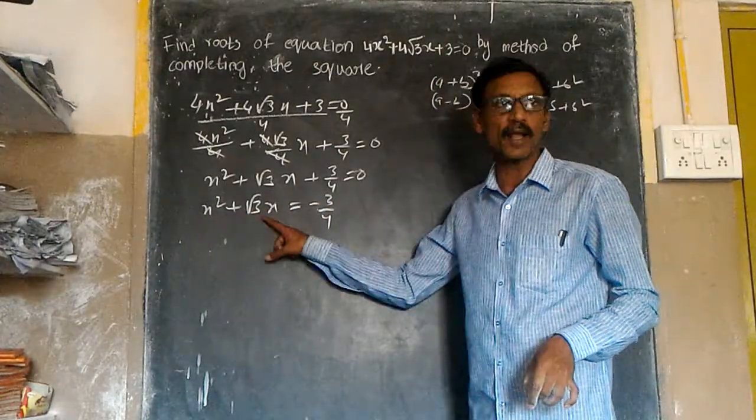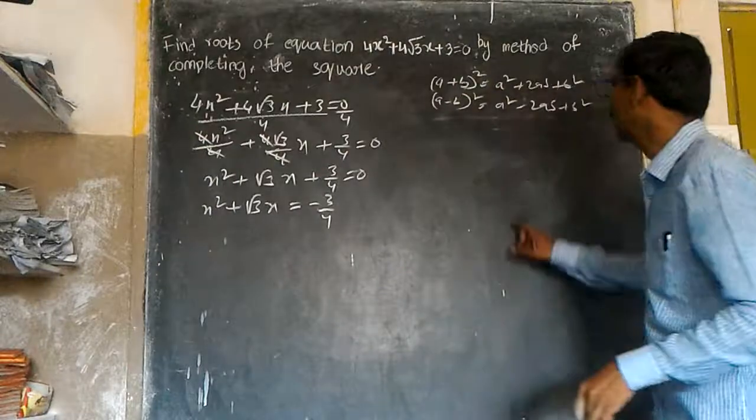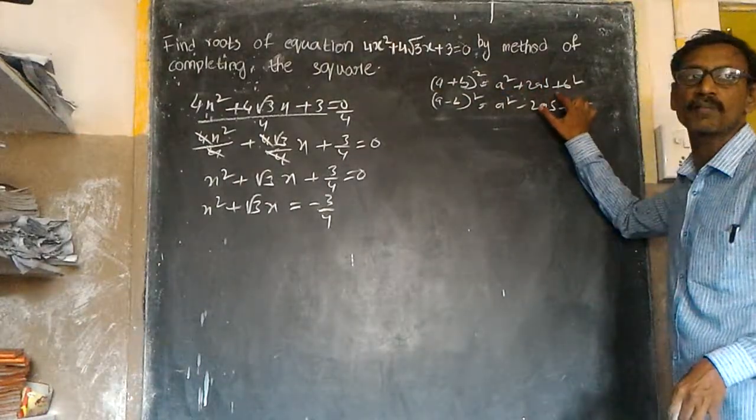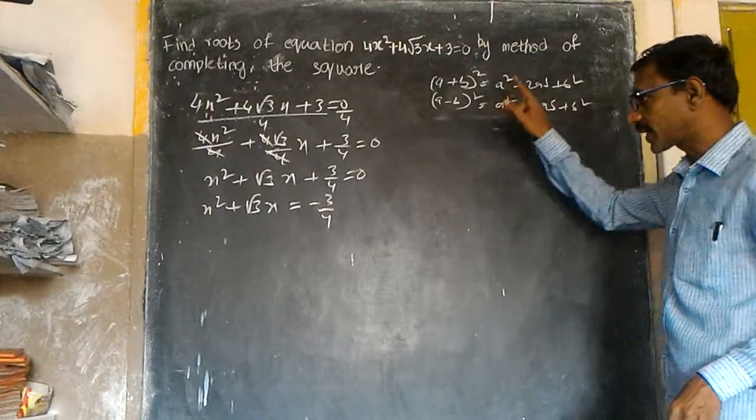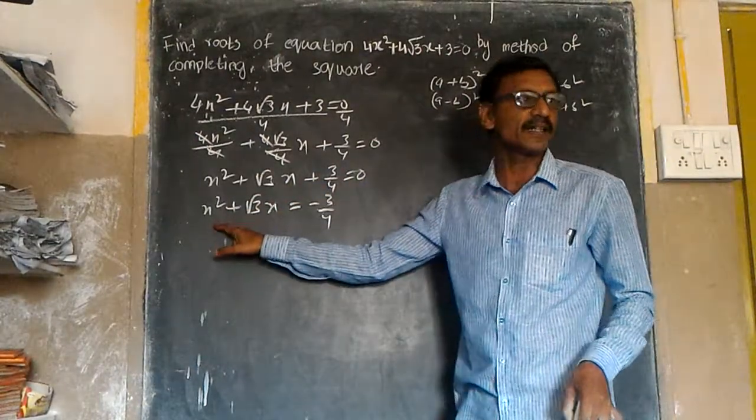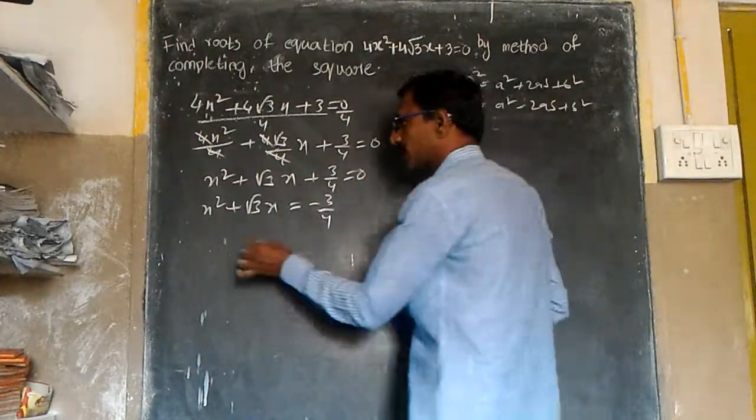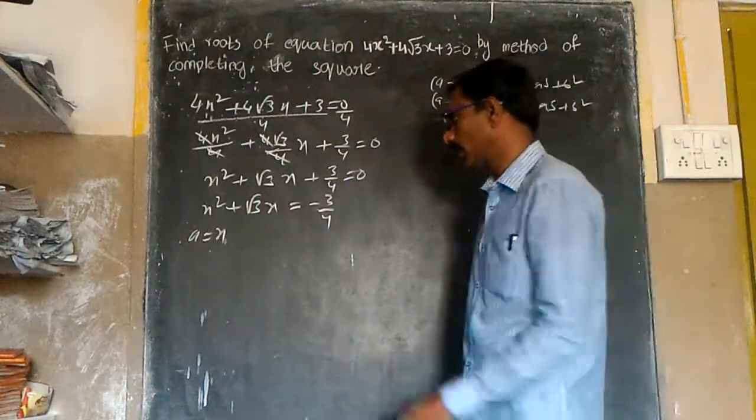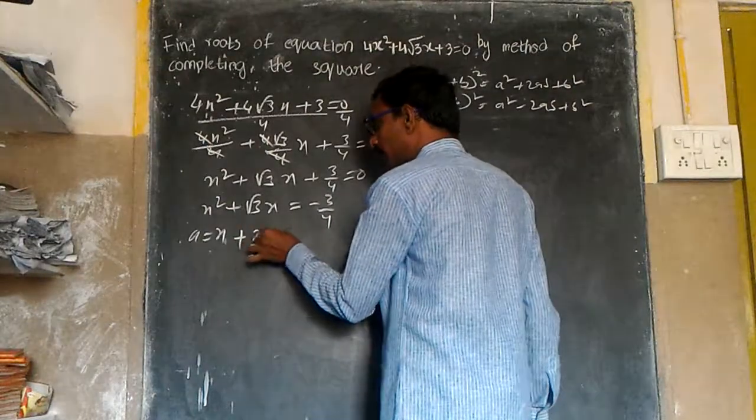Now we need to convert this to a² + 2ab form. We have a² which is x². Now we write the middle term as 2 times x times something.